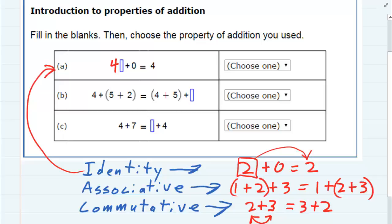And in the next example, four plus five plus two equals four plus five plus something. The only thing that's changed here is the sequence in which we're adding. So in the first one, the last two were grouped together. In the right-hand side, the first two are grouped together. So the other number must